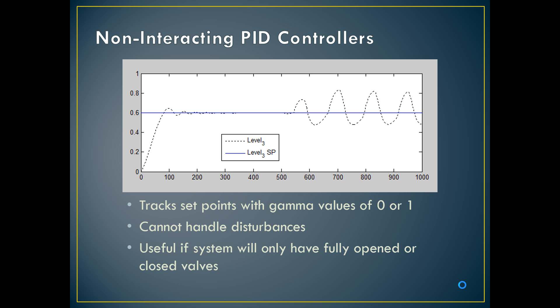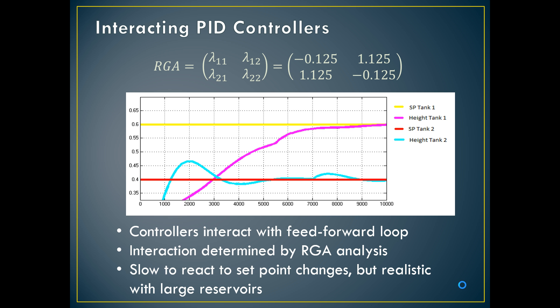To overcome some of these shortcomings we implemented an interacting PID controller. In this case each controller had a feed-forward loop going to the other controller so they would each know the output of the other and be able to change those pump settings accordingly.